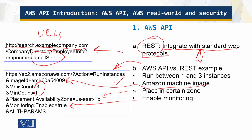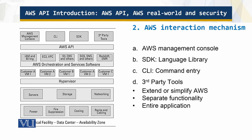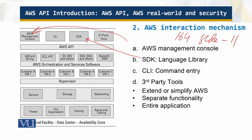Now, how do people interact with Amazon Web Services? First, there is the management console — it is graphical and you can look at it in module 164, slide 11. Second, there is the SDK or language library through which programmers can access those services. Third, there is the Command Line Interface, or CLI, where you can type commands directly.